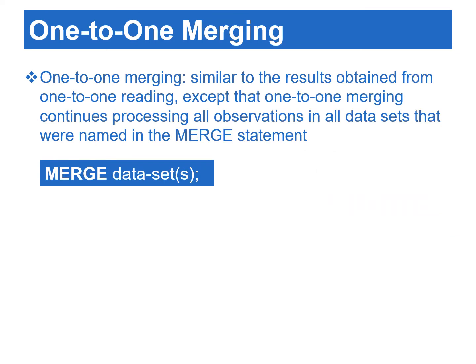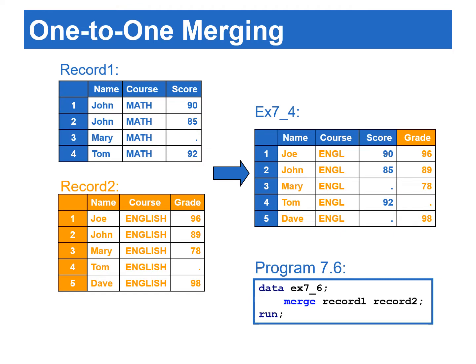Another method to combine data horizontally is one-to-one merging, which uses the merge statement without adding a by statement. The result from a one-to-one merging is similar to what we get with one-to-one reading, except that one-to-one merging processes all observations from all data sets listed in the merge statement. Program 7.6 uses one-to-one merging to combine record one and record two, and the last record from record two is also added to the final data.